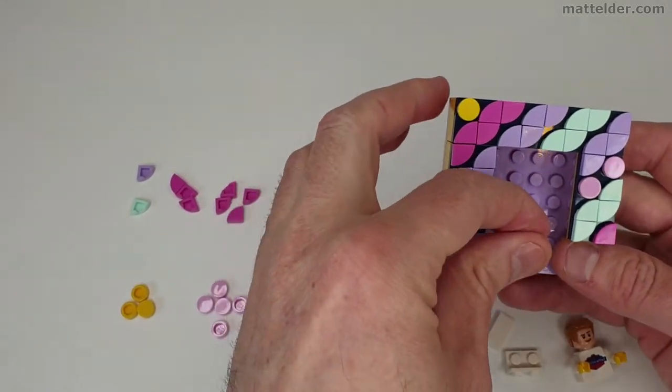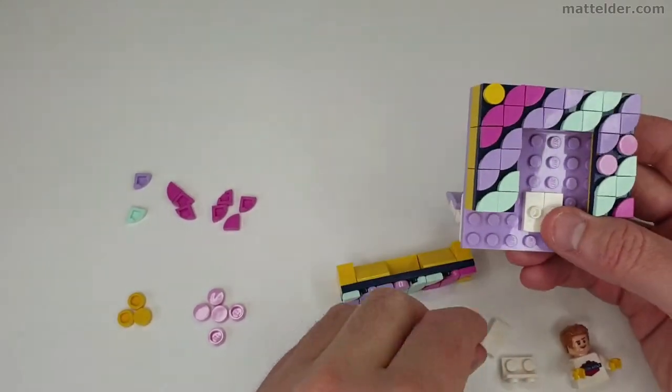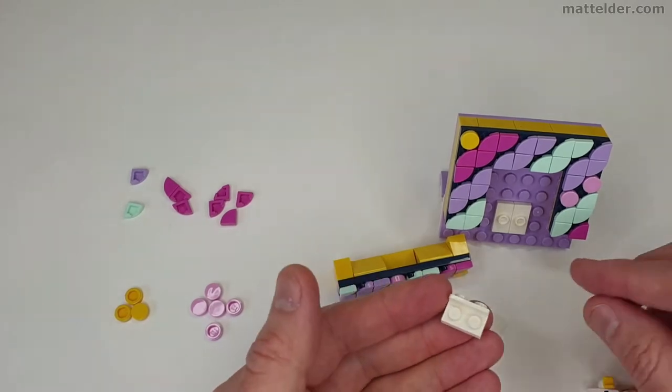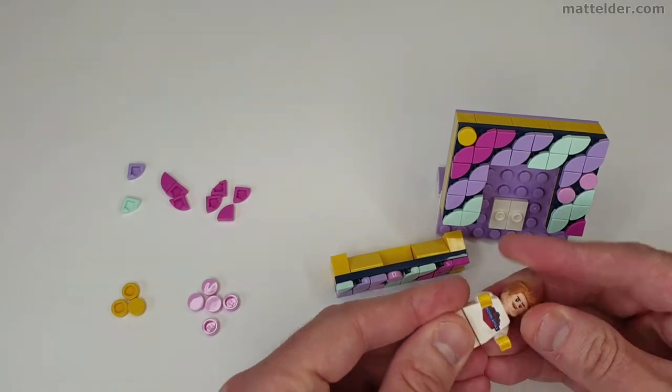So then taking the frame, put one on the jumper plates there, another one next to it. Then we are going to take our inverted, just put a little tile on there just to make it a little bit more flush and so you don't see the stud.